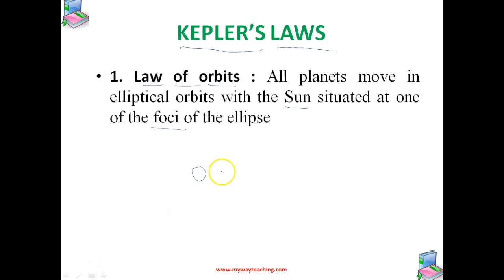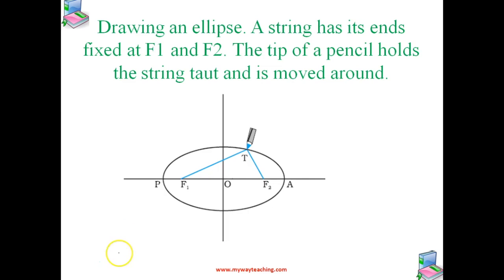If the sun is here, the sun will be at one of the foci of the ellipse, and all the planets will be revolving around the sun. In this figure, you can see how to draw an ellipse: a string has its ends fixed at points F1 and F2. The tip of the pencil holds the string taut and is moved around — this is how we draw the ellipse.